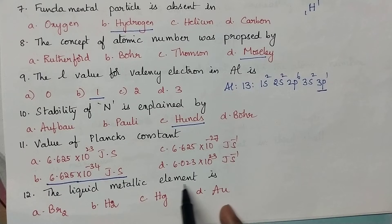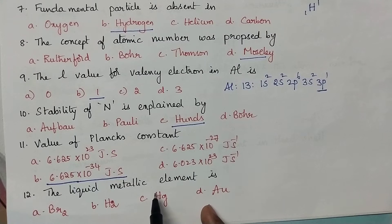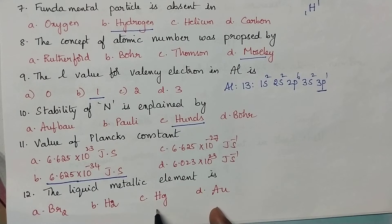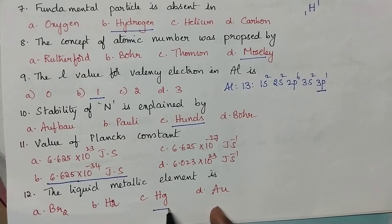The liquid metallic element is: the only metal which is present in the liquid state is mercury.